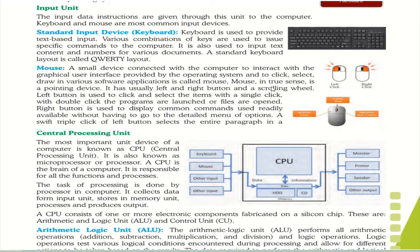Next is the input unit. Input instructions are given through this unit of the computer, like keyboard and mouse. There are various other input units as well, like scanner and microphone. The standard input device is the keyboard, which is used to provide text-based input. Various combinations of keys are used to issue specific commands — function keys, shift keys, enter key, alt key, control key, numeric keys, and arrow keys. Arrow keys are used for navigation.